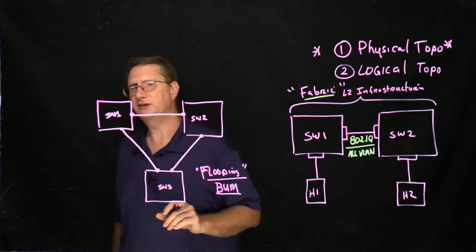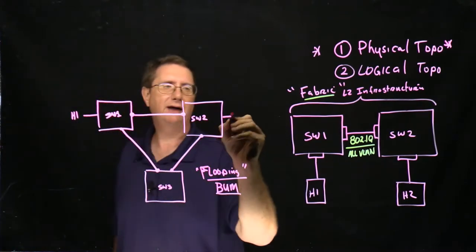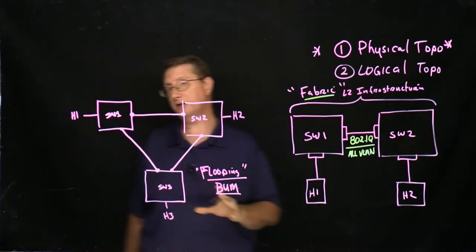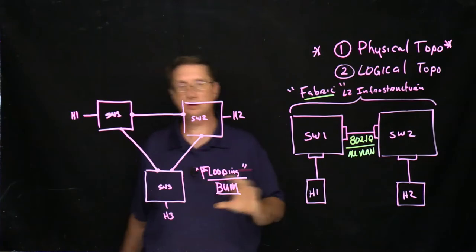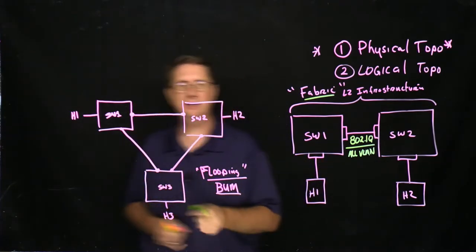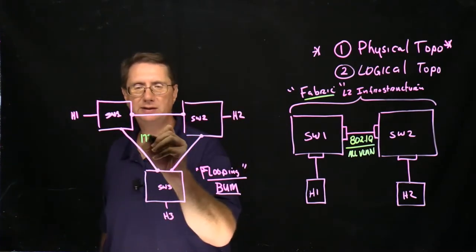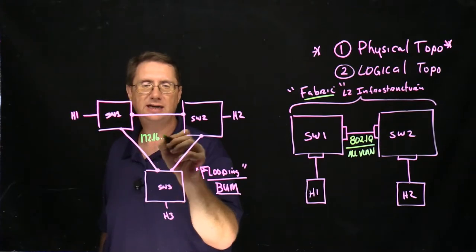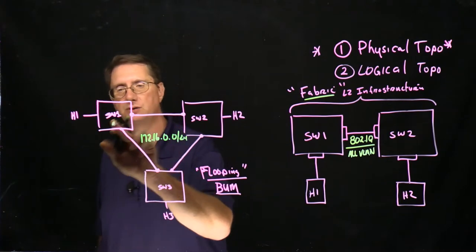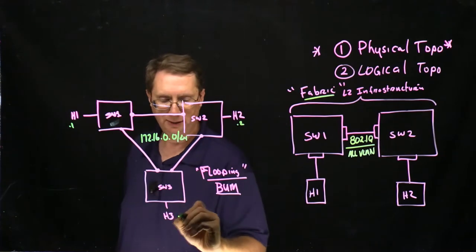Now the problem with this is let's operate under the assumption here that I have a host. I have host one, I have host two, and I have host three. Now the way this is currently configured, each one of these devices is going to ultimately be able to communicate with every other device. But the thing that we need to understand here is let's pay attention to the fact that we put these guys into a network, 172.16.0.0 slash 24, where the hosts will be .1, .2, and .3.